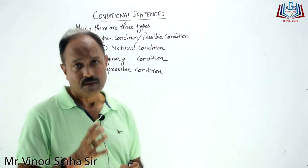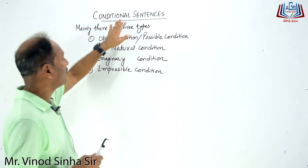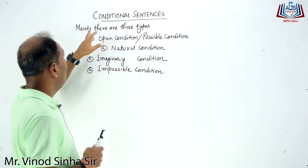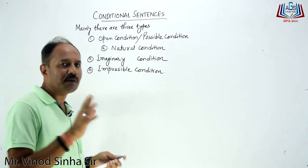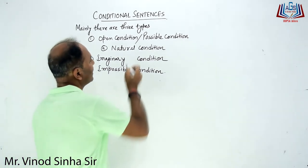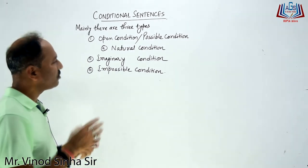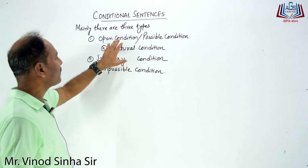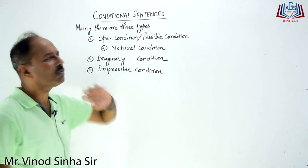Today we are going to learn what I have written. Conditional sentences are of 3 types — I have mentioned three types generally. But you can also remove the pattern, meaning there are a few things that can be altered and changed. The types are: open condition, possible condition, and probable condition.